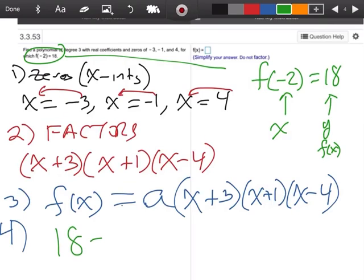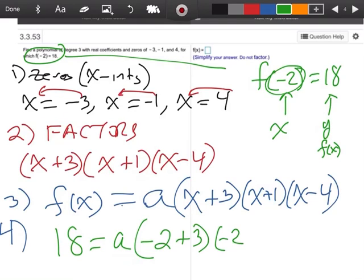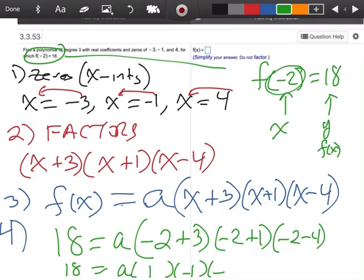So right here, I'm going to put 18 equals a. Remember what the x number is. It's negative 2. So I'm going to go negative 2 plus 3, negative 2 plus 1, negative 2 minus 4. And I'm going to do this again. 18 equals a. Let's see. Negative 2 plus 3 is 1. Negative 2 plus 1 is negative 1. Negative 2 minus 4 is a negative 6.